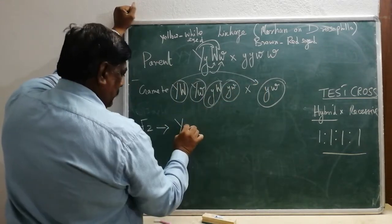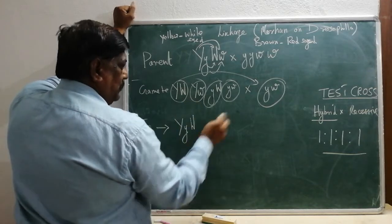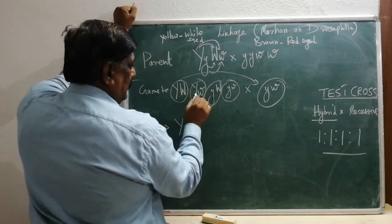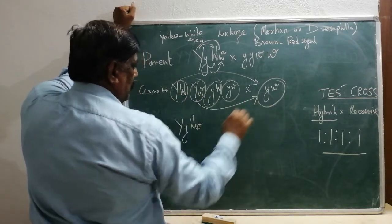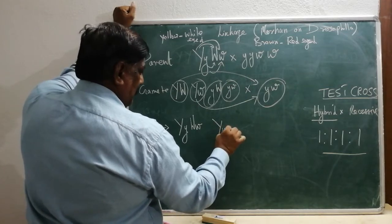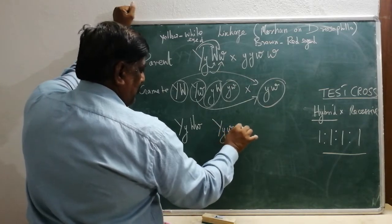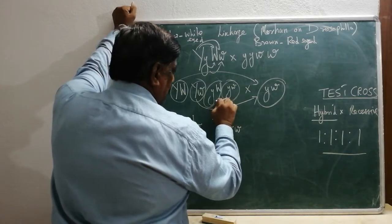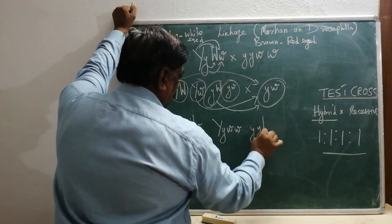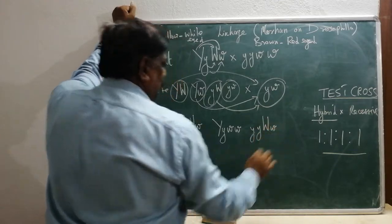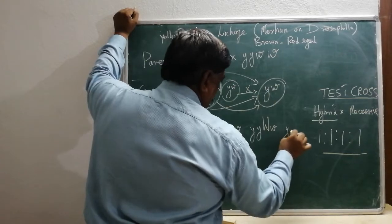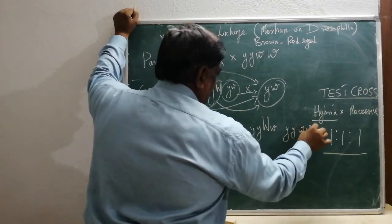When the crosses are made in F2 generation, the four combinations obtained are: capital Y small y, capital W small w; then capital Y small y, small w small w; then small y small y, capital W small w; and small y small y, small w small w.